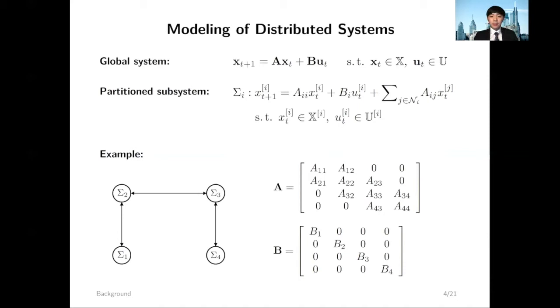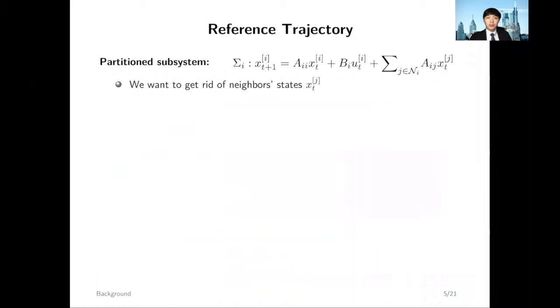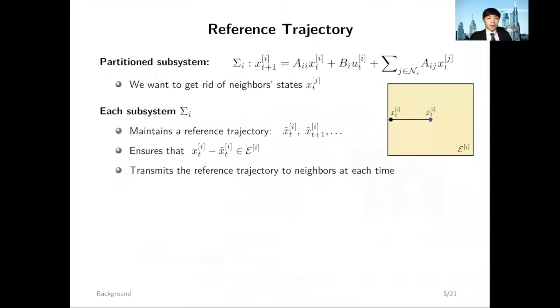Here, I'm assuming the global system is a standard LTI system with polytopic state and input constraints. Moreover, I'm assuming the global system can be partitioned into several subsystems with state coupling. Now, if you look at this partitioned subsystem dynamics, it has dependencies on the neighbor states, and this is not good for prediction if you're using MPC.